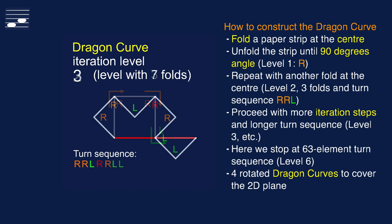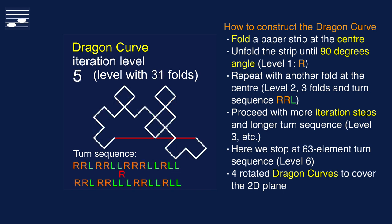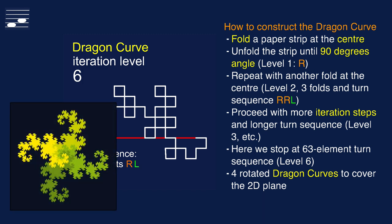The center fold is marked with a red R. As is typical for a fractal, we may repeat this iterative process at a more detailed level, thus obtaining levels 3 and higher, with an increasing length turn sequence. At level 4 we observe the first appearance of a closed rectangle, with a series of three right turns. We stop the iterations at level 6, with a 63 element turn sequence. With appropriate positioning and rotation, four Dragon curves will fill the two-dimensional plane, as we saw earlier.